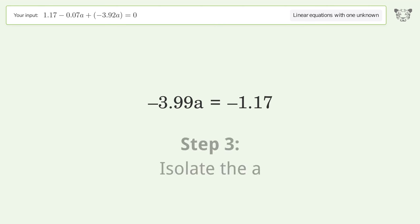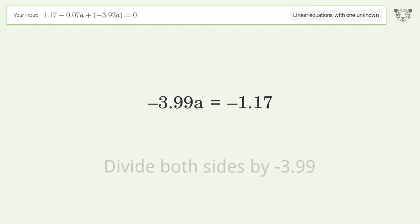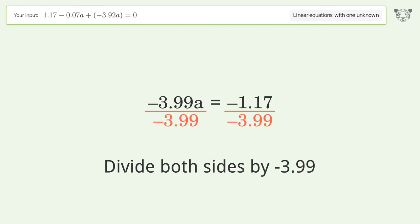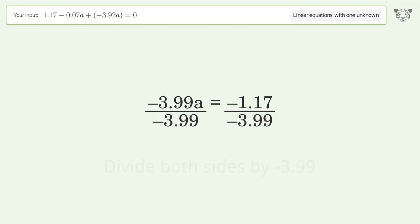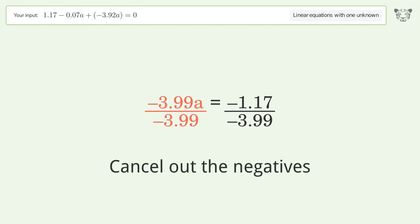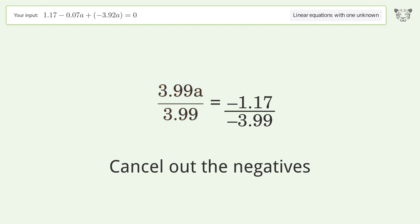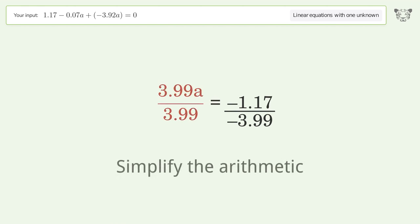Isolate the variable a — divide both sides by negative 3.99. Cancel out the negatives and simplify the arithmetic.